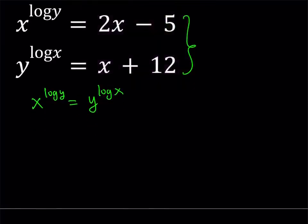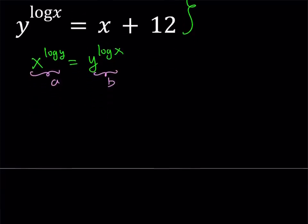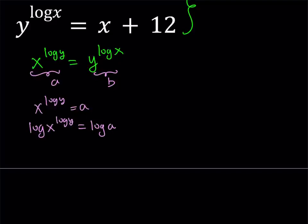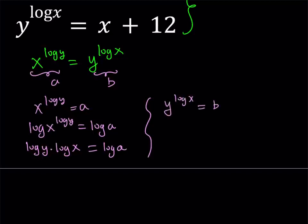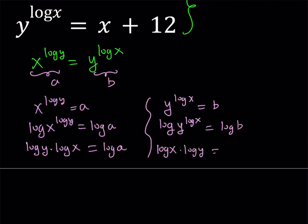Since I don't know if they're equal at first, let me call x to the power log y as 'a', and y to the power log x as 'b'. My assumption is that x to the power log y equals a. I'll log both sides — base 10 is fine here. Log y is a power, so we can move it to the front: log y times log x equals log a. Now let's do the same for b. We have y to the power log x equals b. Logging both sides: log x times log y equals log b.